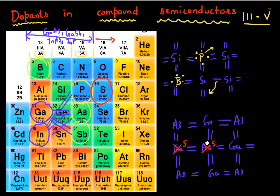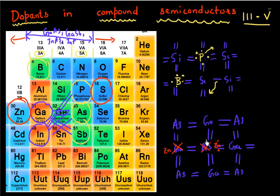Similarly, if I want an acceptor, I should go left of column three. For example, replacing gallium with zinc, which only has two valence shell electrons per atom — less than gallium's three and arsenic's five — means it can act as a good acceptor. So looking in group two of the periodic table gives options for acceptors, and looking in group six gives options for donors in three-five semiconductors.